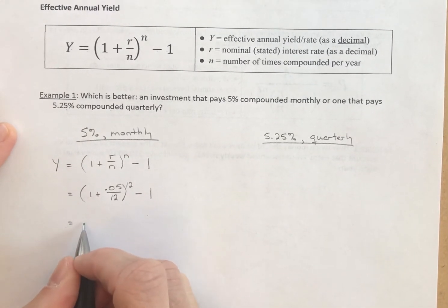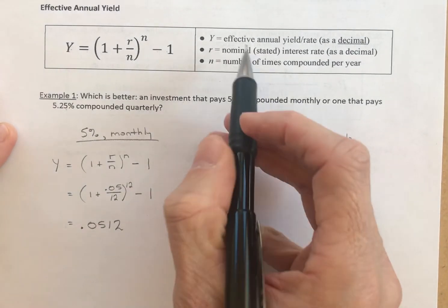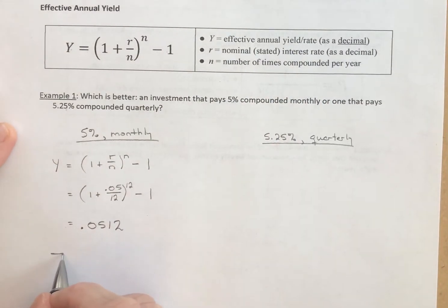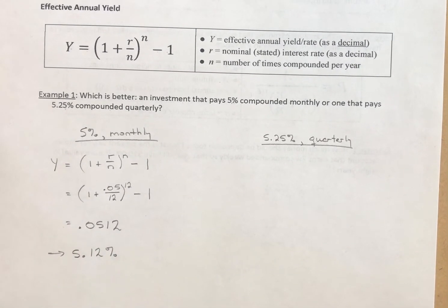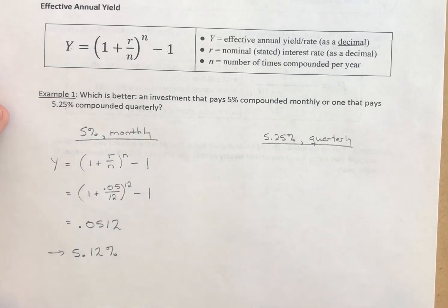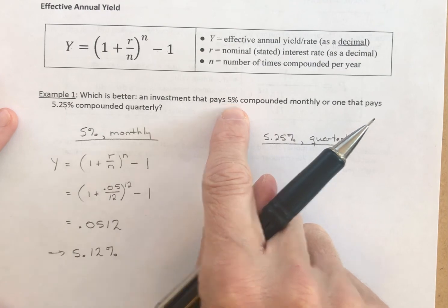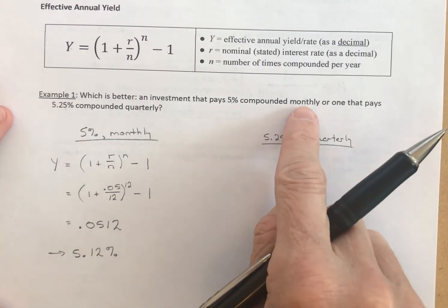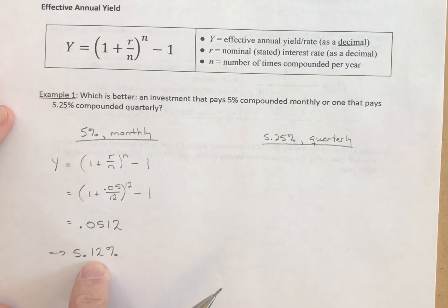Out comes a decimal. In this case, it was approximately 0.0512. Remember the yield comes out as a decimal. To make it a percent, we'll multiply it by 100. This is a 5.12% effective annual yield. So they advertised the nominal rate as 5%, but when all was said and done after the year, because they compounded monthly, you actually got paid a 5.12% interest rate.